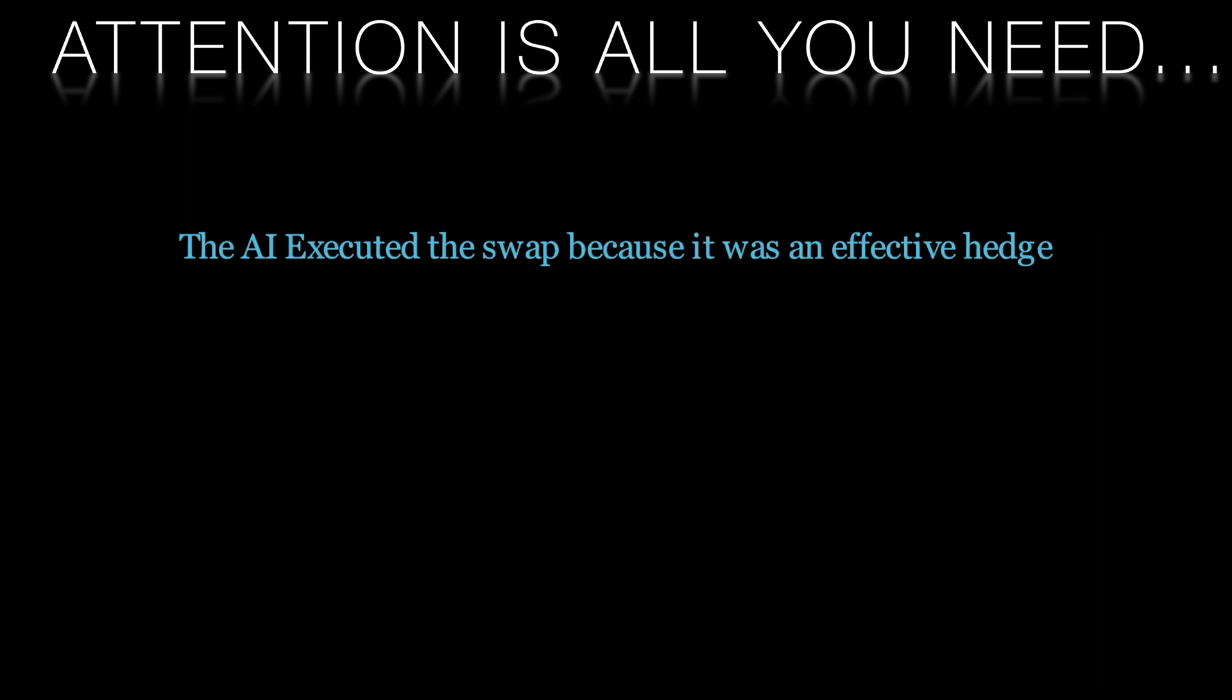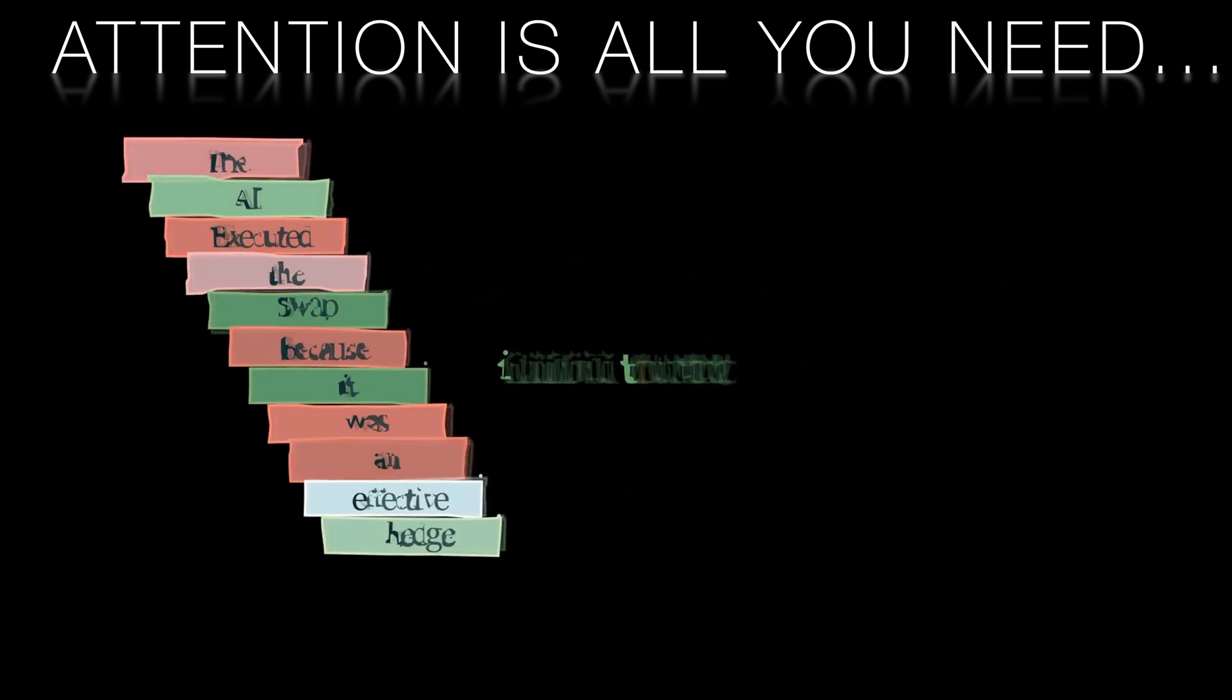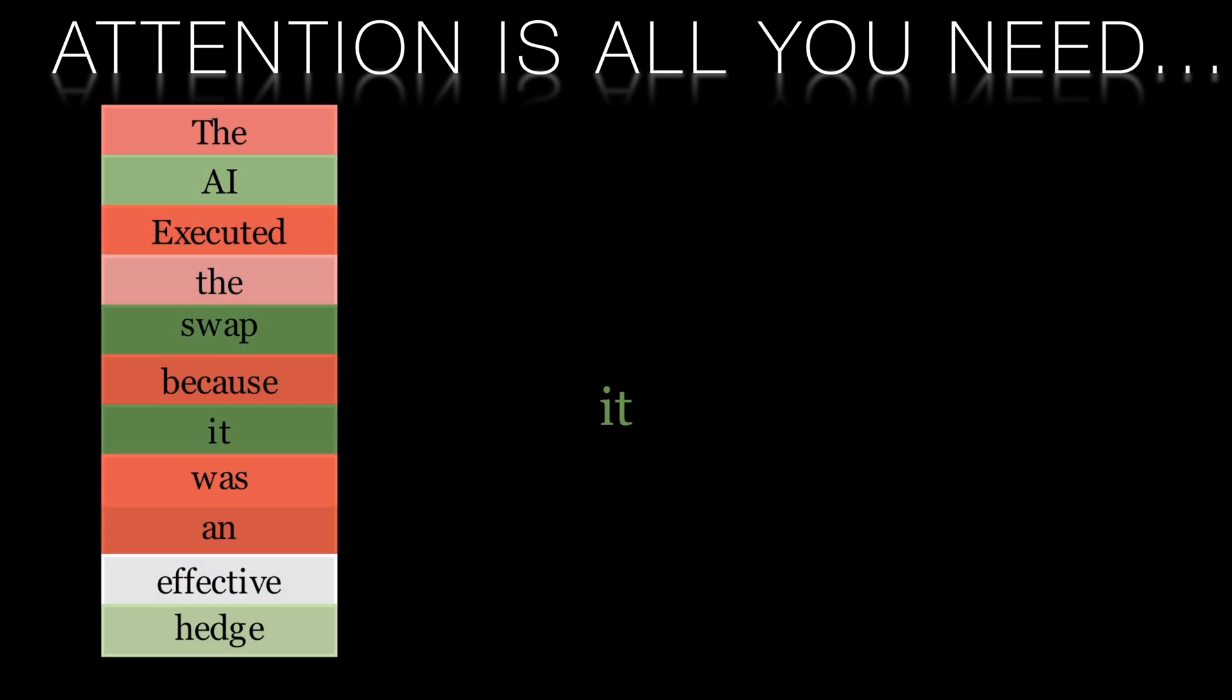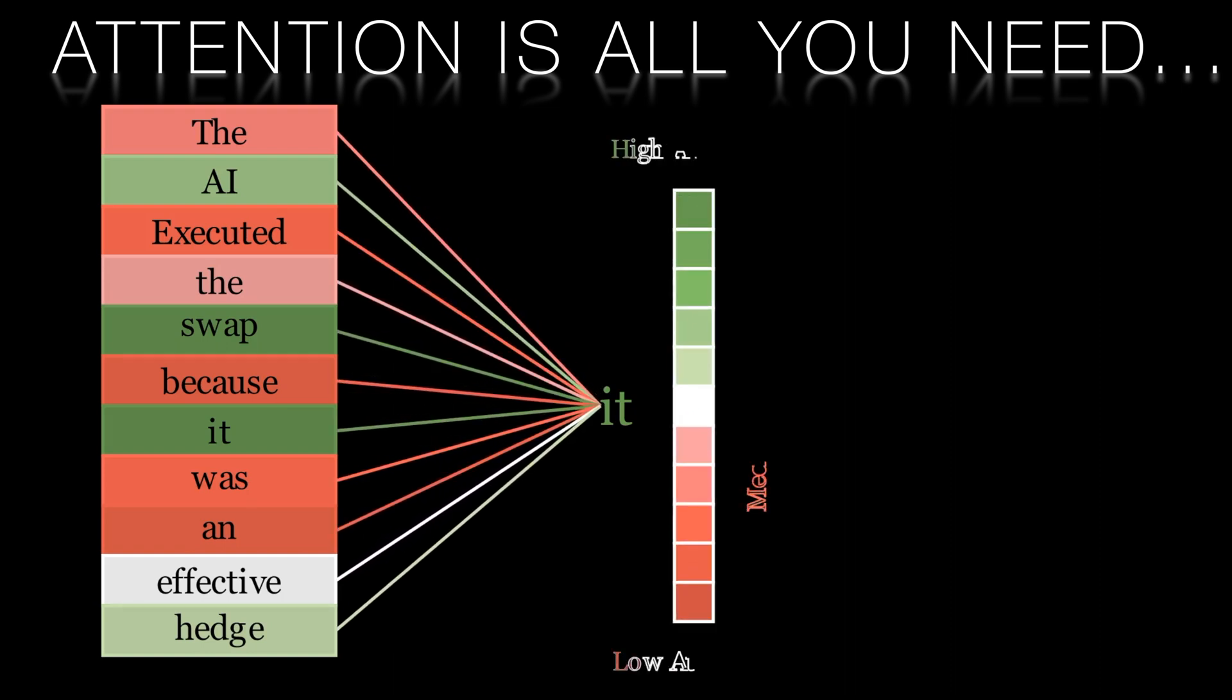These attention mechanisms allow the model to weigh the importance of different words or tokens in the input sequence when generating an output. Each attention layer computes a score for every pair of tokens in the input sequence, which represents how relevant one token is to another. These scores are then used to compute a weighted sum of the input tokens, which serves as the input for the next layer in the network. This process is repeated multiple times, allowing the model to capture complex relationships between words and concepts in a text.